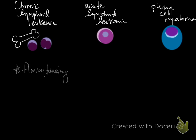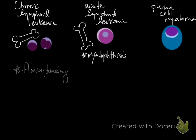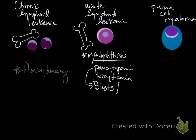Acute lymphoid leukemia is kind of the opposite — it starts in the marrow and tends to take over the marrow, causing myelophthisis. It's more likely to cause pancytopenia or at least bicytopenia. Most of the time blasts will be in circulation along with pancytopenia, though occasionally you won't see them in blood and will need a bone marrow exam to diagnose it.